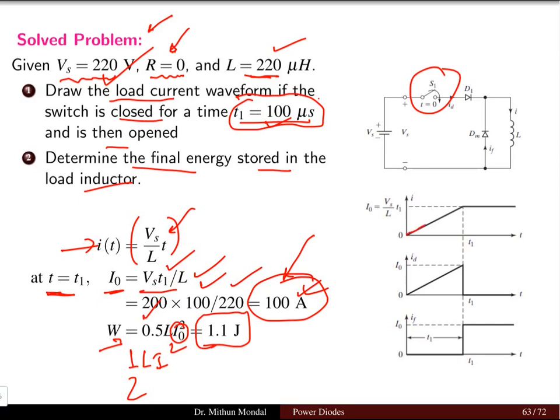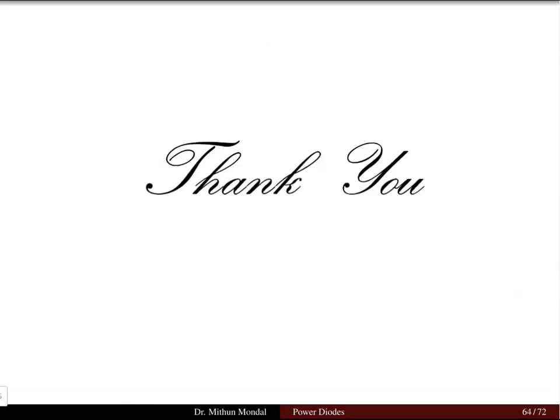Since there is no resistance in the network, the current increases in a linear fashion until the steady state is reached at time T1. The maximum current value is Vs/L × T1. After T1, the current becomes constant and this current flows through the freewheeling diode. This concludes the lecture on the freewheeling diode with RL load. Review the RL load lecture if needed to understand how the diode with RL functions and the role of the freewheeling diode. See you in the next lecture.